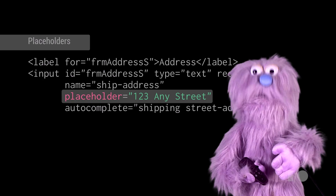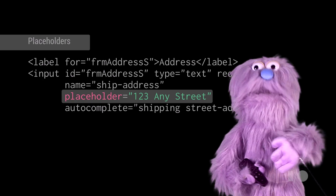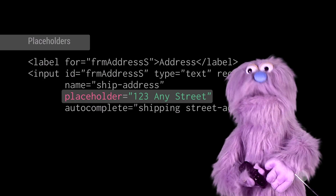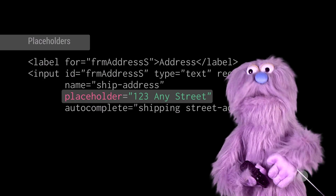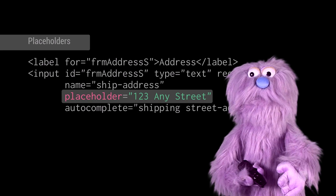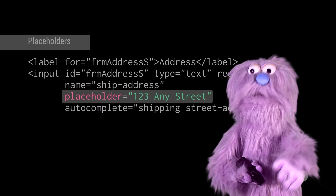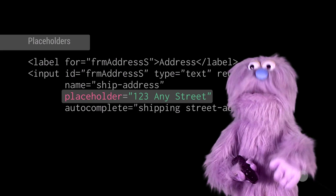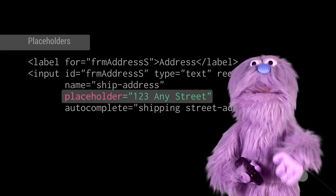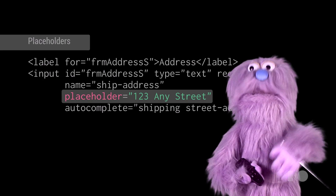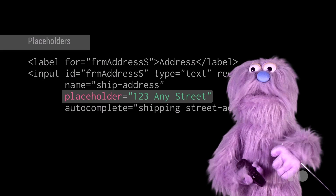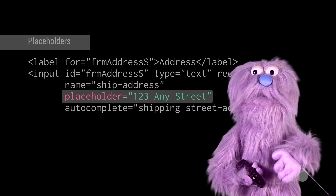Placeholders give hints about the expected input. Adding a placeholder attribute will display its value as light text, until the element gets focused. Best of all, it's all done auto-magically by the browser, with no extra JavaScript required.